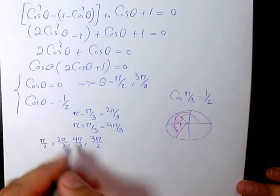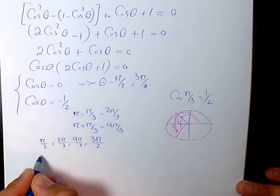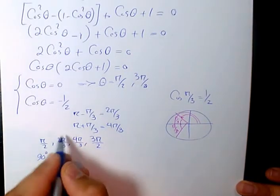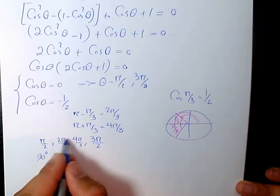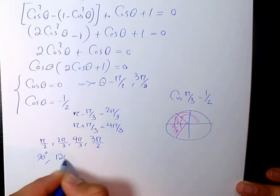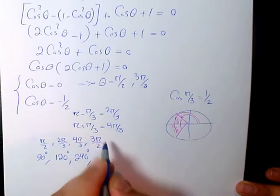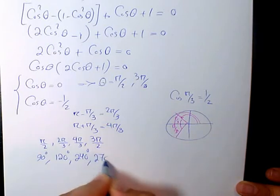So in radians, if you want to write it in terms of degrees, it's going to be 90 degrees. 2π/3 is going to be 120 degrees. This one is going to be 240 degrees. 3π/2 is going to be 270 degrees.